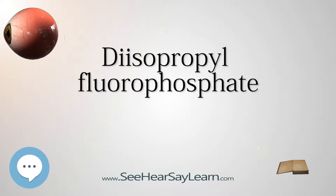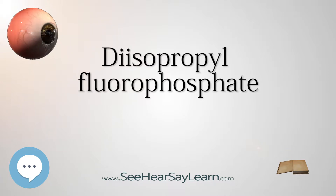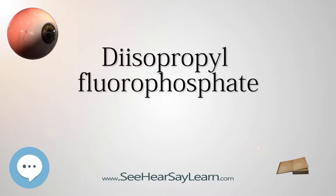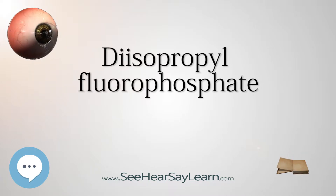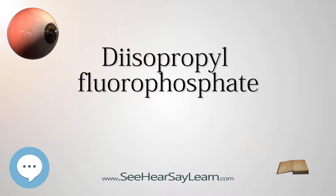Diisopropyl fluorophosphate is an oily, colorless liquid with the chemical formula C6H14FO3P. It is used in medicine and as an organophosphorus insecticide. It is stable, but undergoes hydrolysis when subjected to moisture, producing hydrofluoric acid.